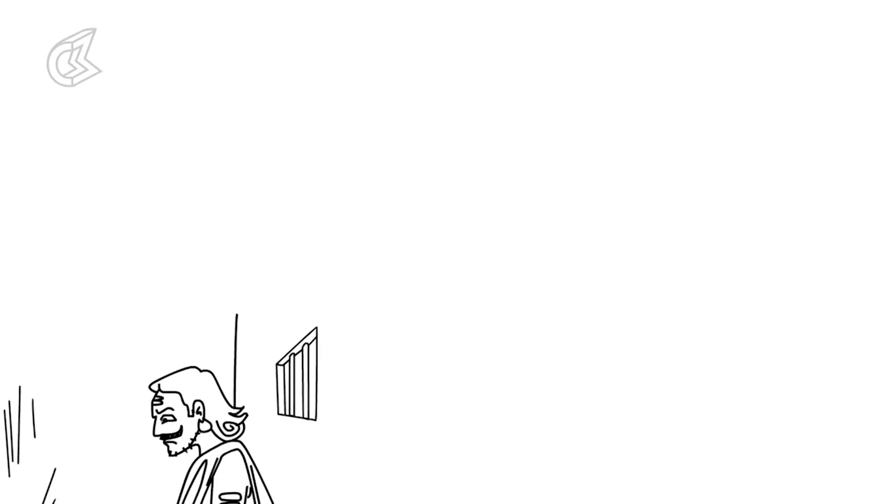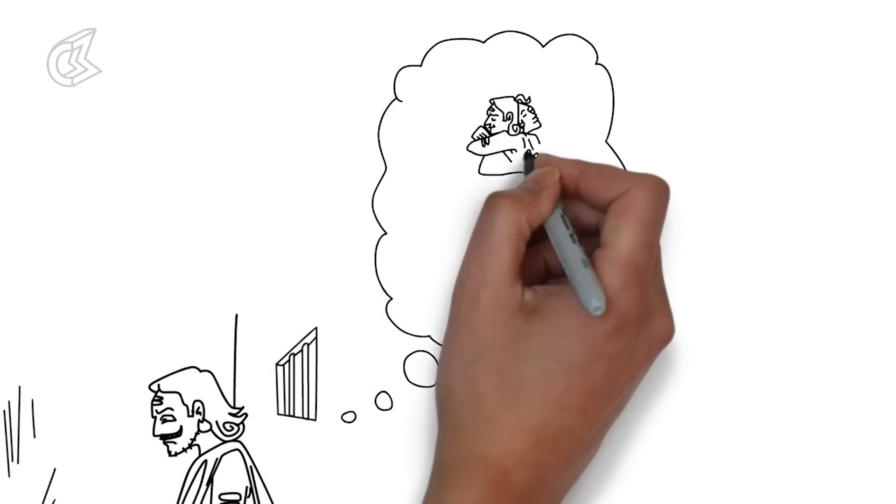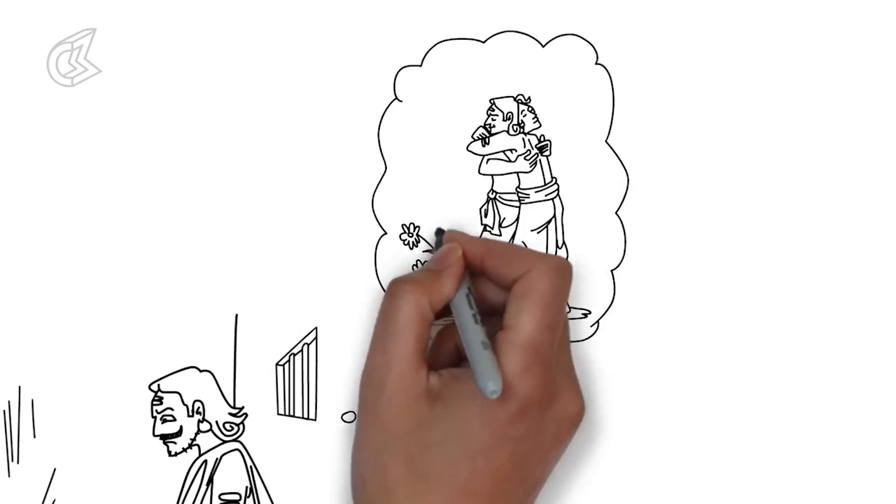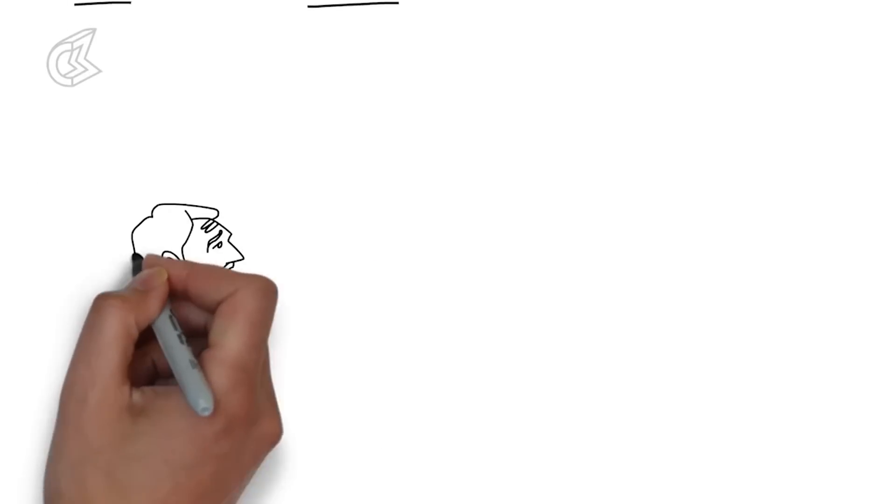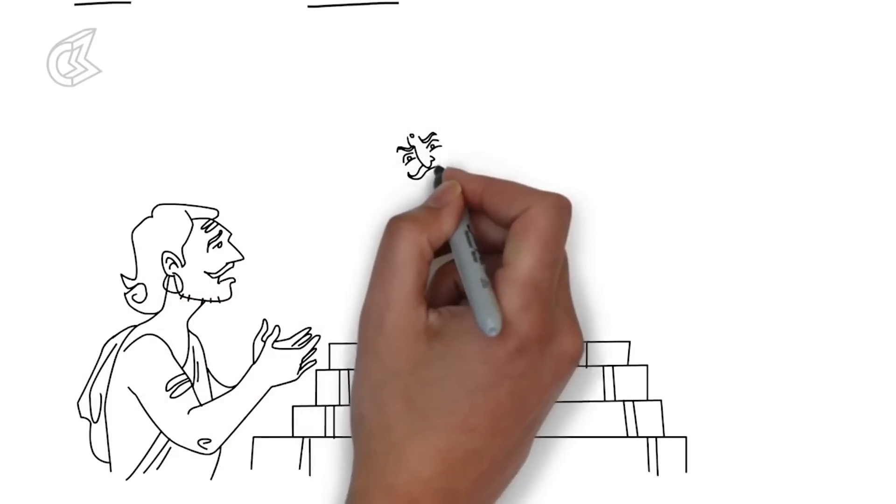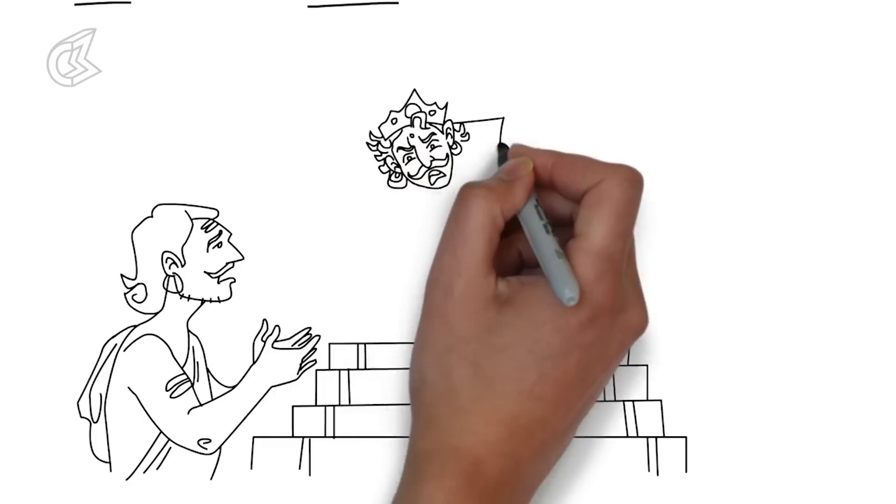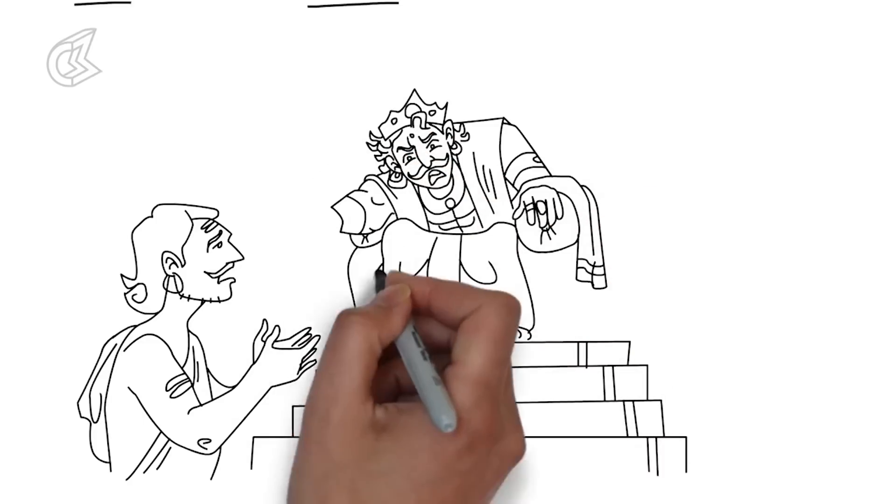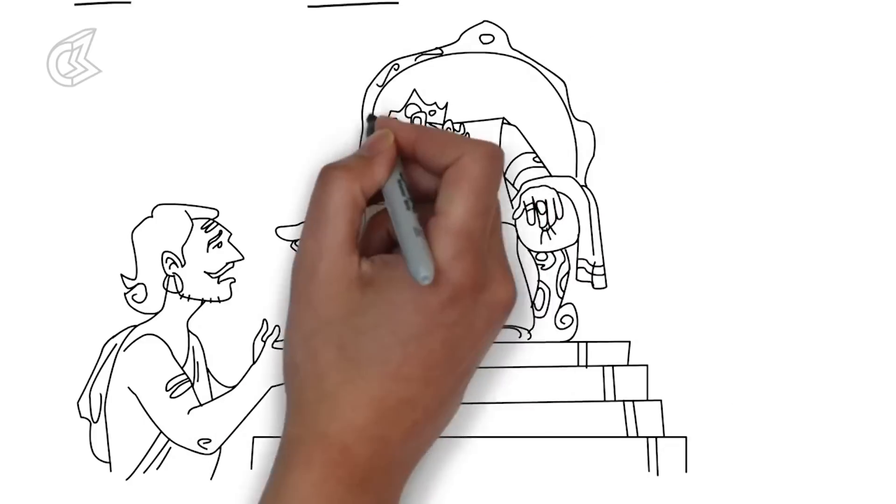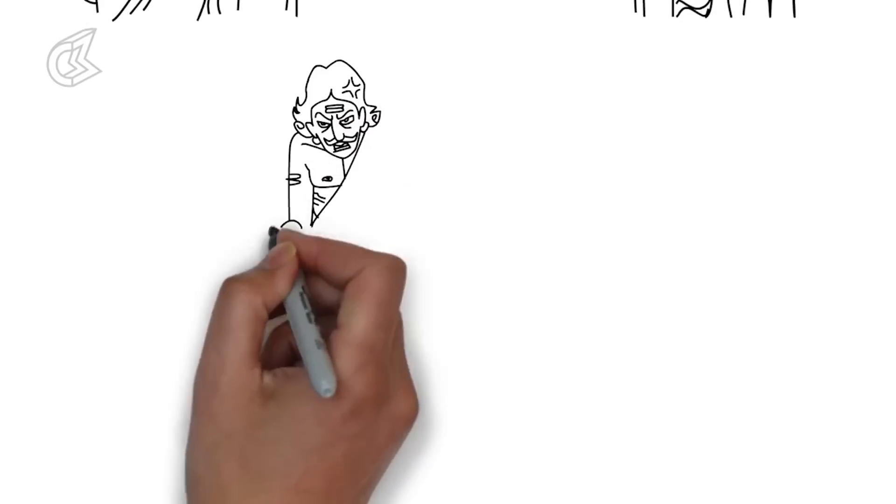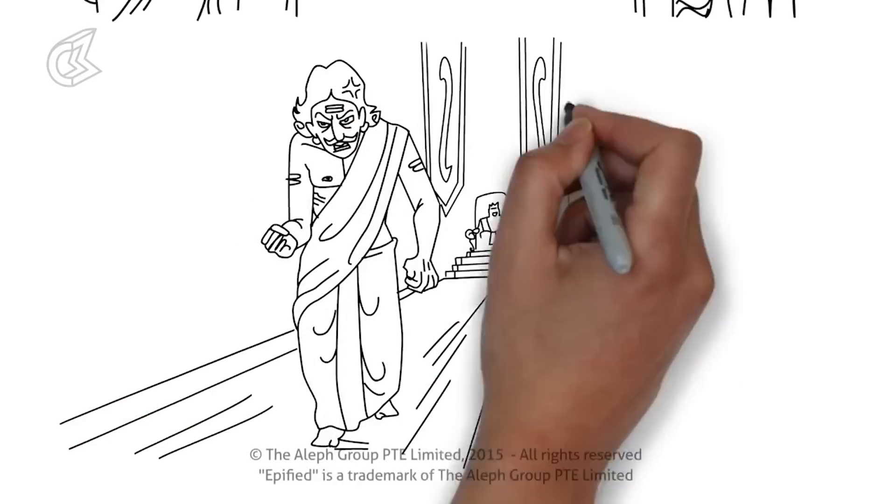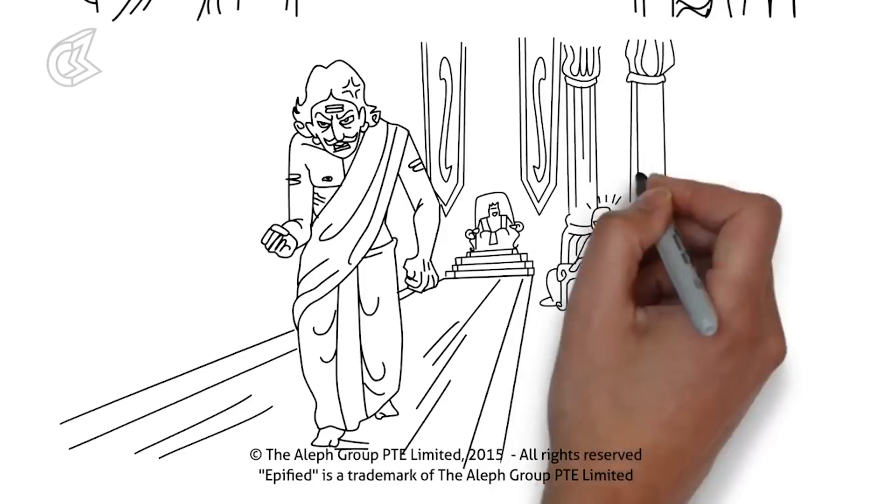When Drupad ascended the throne of Panchala, Dron was confident that Drupad would treat him generously and would give him a part of his kingdom. Dron went to Panchala and reminded the king of their friendship and the promise that he had made. Drupad had changed. He was drunk with power and refused to recognize Dron. He denied ever having made such a promise and insulted Dron for daring to appear before him. Dron left the palace in rage and vowed to punish the king for humiliating him.